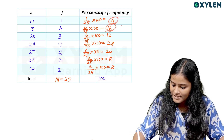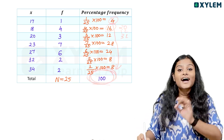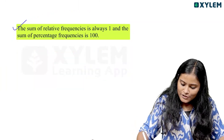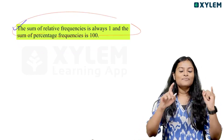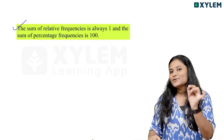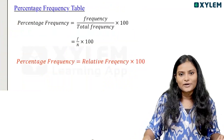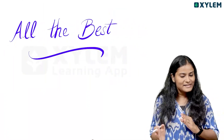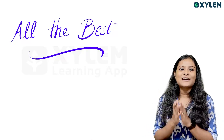4 plus 16 is 20, plus 12 is 32, and so on. The sum of all percentage frequencies is 100. The sum of relative frequencies is 1, and the sum of percentage frequencies is 100. These are the key properties of frequency tables. Please work this out on your exam. All the best. Thank you. Bye, everyone.